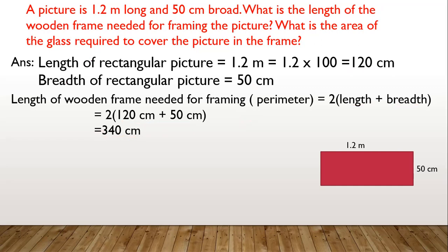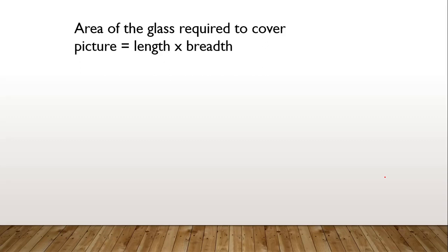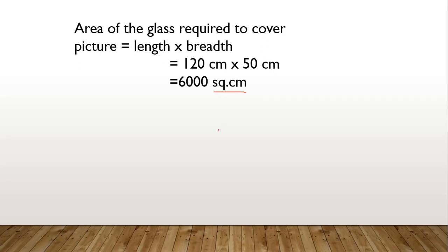Next we find the glass required to cover the picture, which means we find the area of the rectangle. Area of glass required = length × breadth = 120 centimeter × 50 centimeter = 6000 square centimeter. Hence we require a glass of 6000 square centimeter to cover the picture.